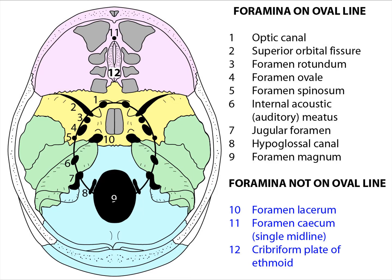Five is the foramen spinosum, through which the middle meningeal artery, a branch of the maxillary artery, enters the skull. Six is the internal acoustic or auditory meatus, into which passes the facial nerve, the vestibulocochlear nerve, and the labyrinthine artery.